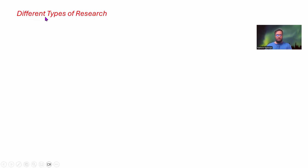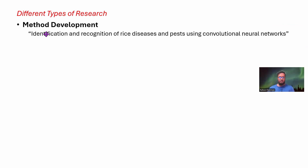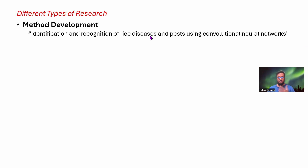First of all, we are going to discuss the different types of research, and you need to select which one you are actually undertaking at the current moment. The first type is method development. For example, identification and recognition of rice diseases and pests using some network — that means it's a method which helps you identify and recognize rice diseases. So it's a method paper, a method type of research.